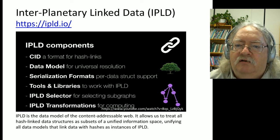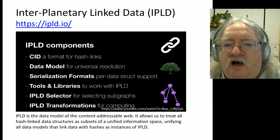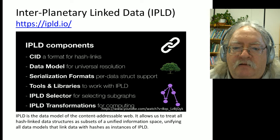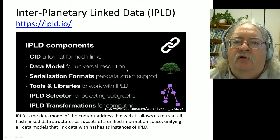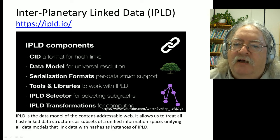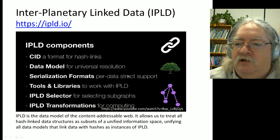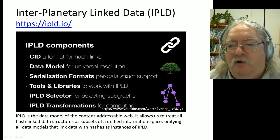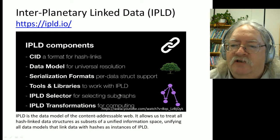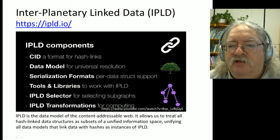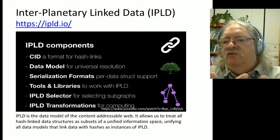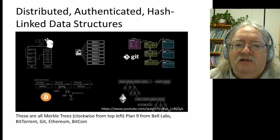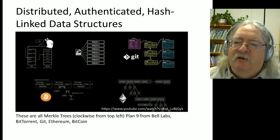Interplanetary Linked Data consists of six major components. I'm only going to talk about one really, which will be the top one - the Content ID. But the rest are all equally important parts of IPLD: the data model for universal resolution, serialization formats so that we can represent linked data in formats like JSON or HTML or even plain text, tools and libraries, selectors for selecting parts of a big graph, and then transformations to change a graph from one kind of graph to a different graph.